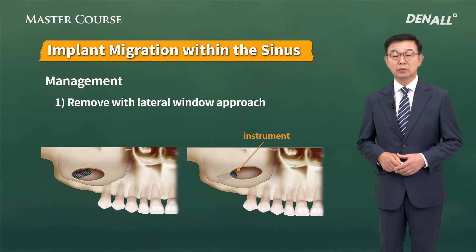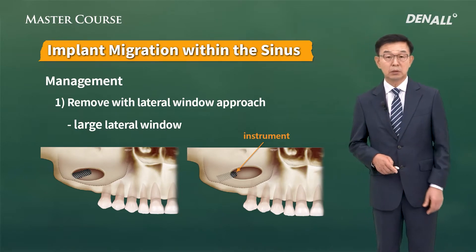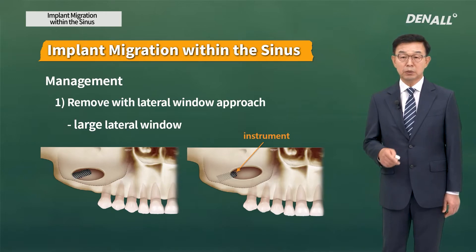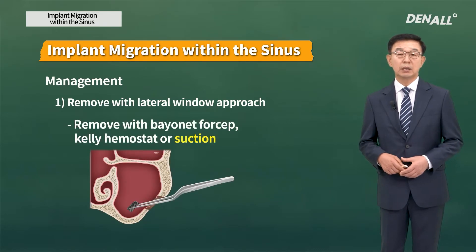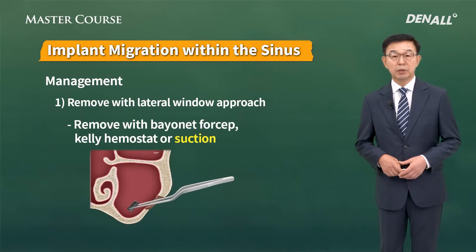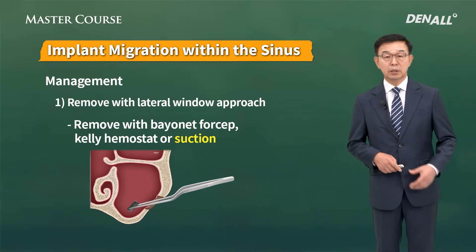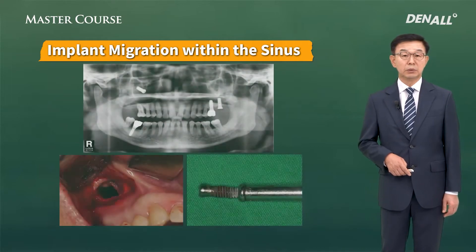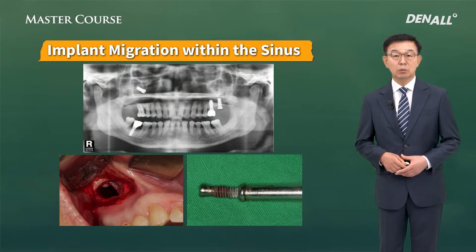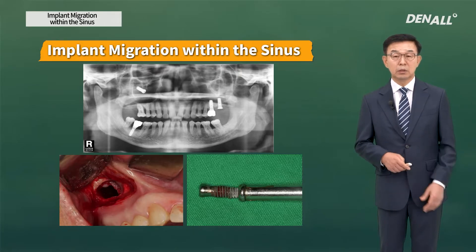When forming the window, you need to make it bigger in order to remove the implant more easily. You can remove it as you see it, but even if you form the window, at times you may not be able to see it. If you are able to see it, you can use forceps or a Kelly clamp to remove it. If you cannot see it, the best way is to use a suction tip — form the lateral window, insert the suction tip within the window, and apply negative pressure to remove the implant.